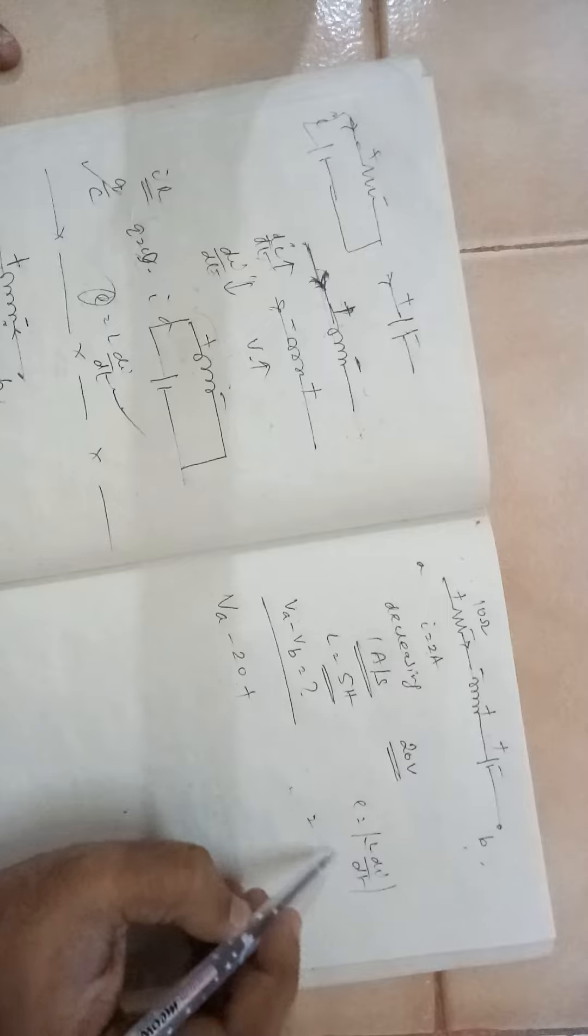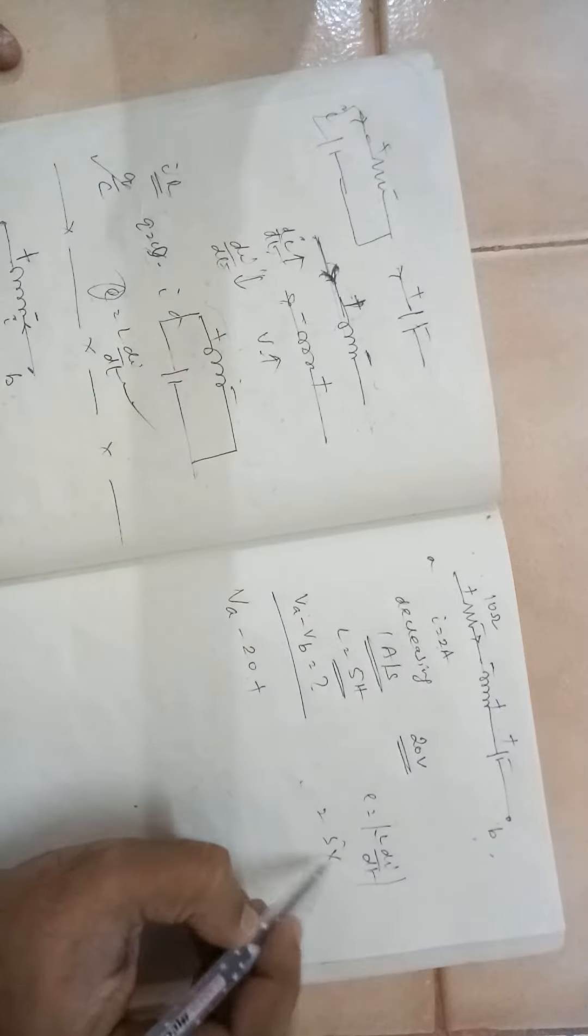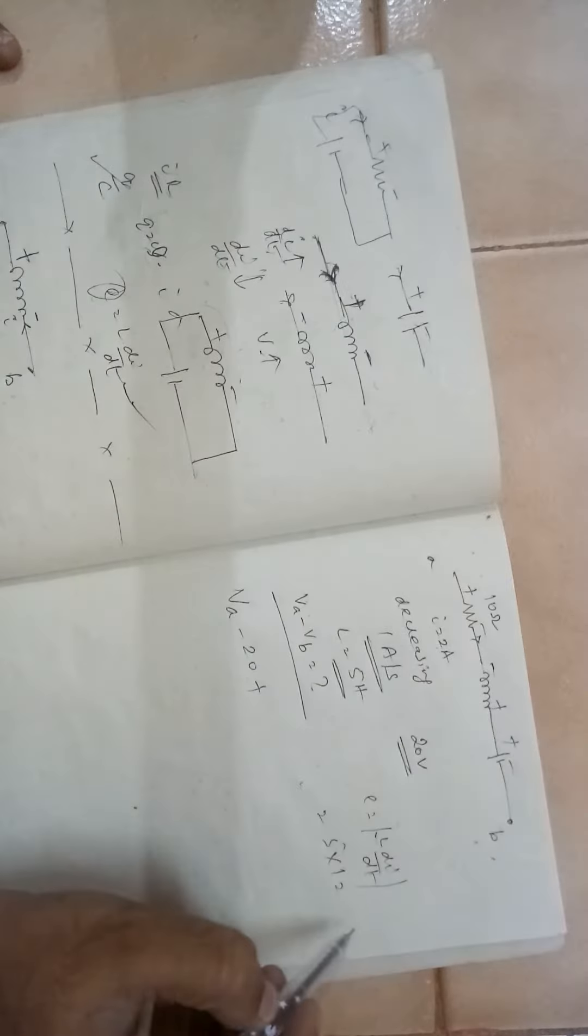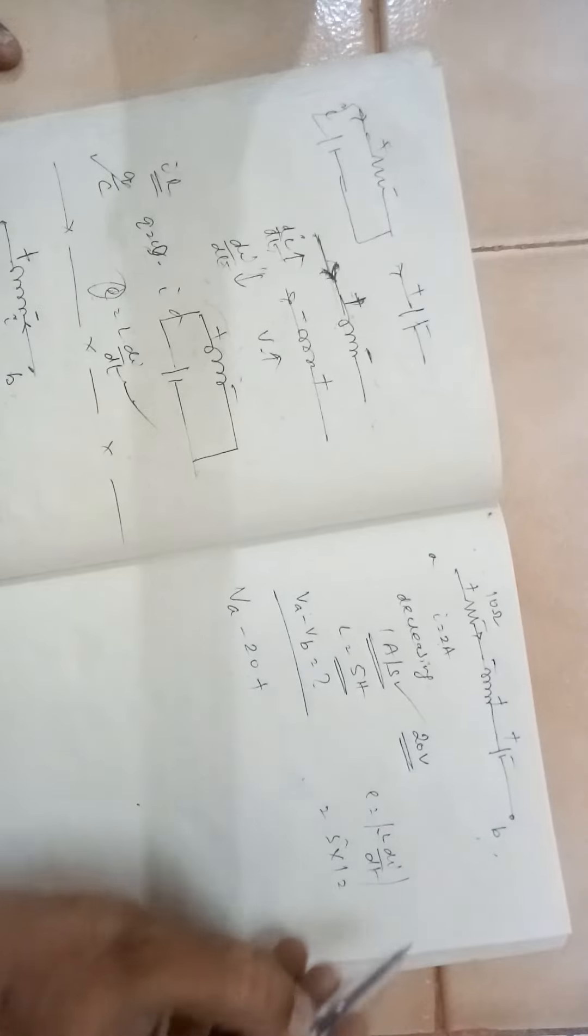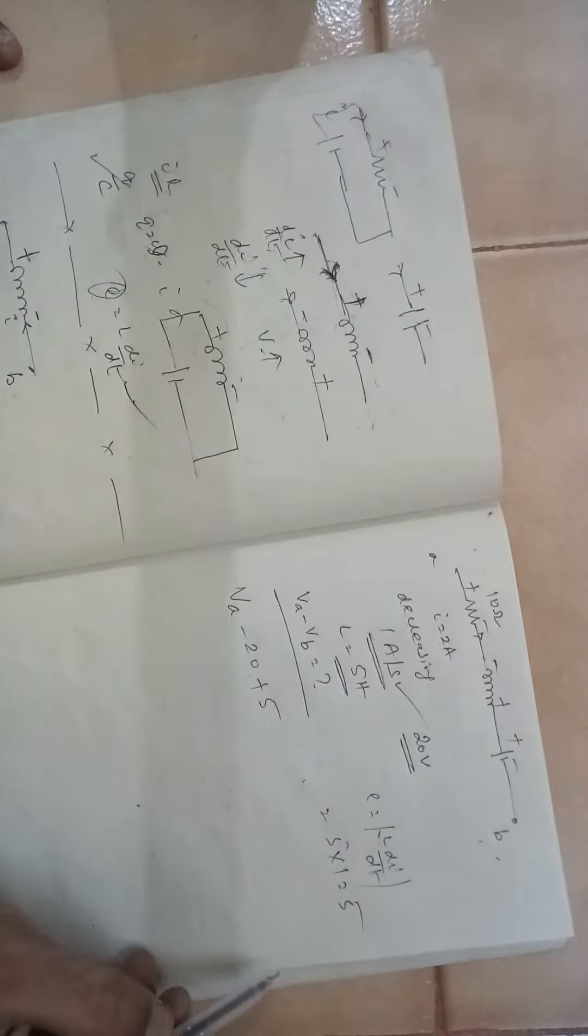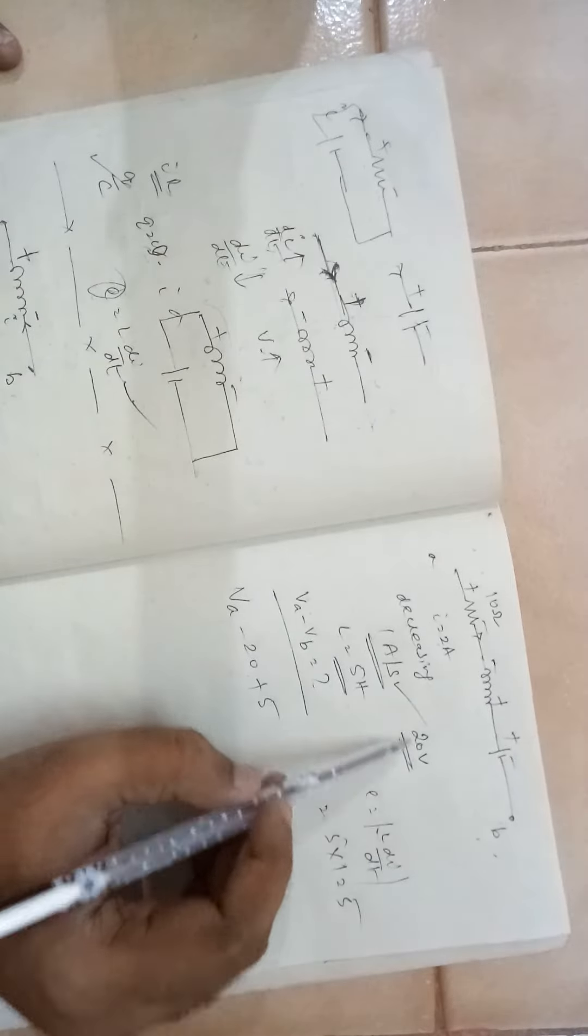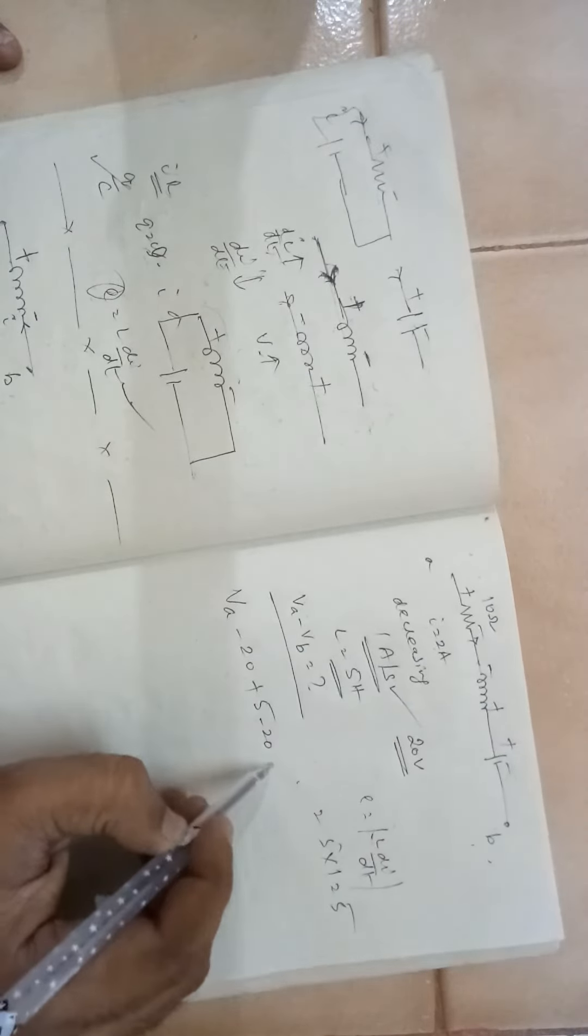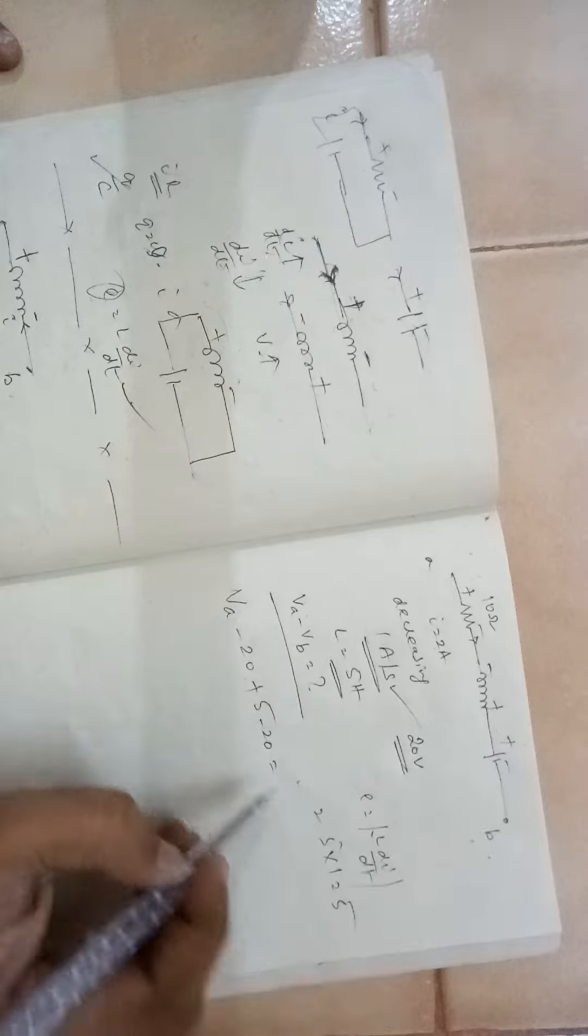L is given as 5 and di by dt is given as 1, so it is 5. Here there is a drop, so it will be minus 20. Then you come to VB.